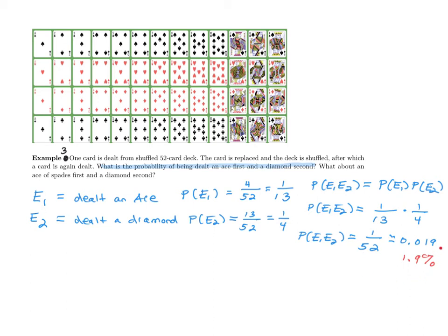We have to be careful that these are indeed independent events. The reason they are independent is because after the first card is dealt, it's put back into the deck and the deck is reshuffled — so it's really like starting over from the beginning. If the card were not replaced, there would be one less card in the deck, which would affect the probability of the second event and make these dependent.